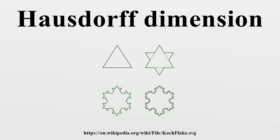For example, the Cantor set, a zero-dimensional topological space, is a union of two copies of itself, each copy shrunk by a factor of one-third. Hence, it can be shown that its Hausdorff dimension is log(2)/log(3) ≈ 0.63. The Sierpinski triangle is a union of three copies of itself, each copy shrunk by a factor of one-half, yielding a Hausdorff dimension of log(3)/log(2) ≈ 1.58.